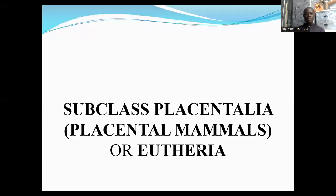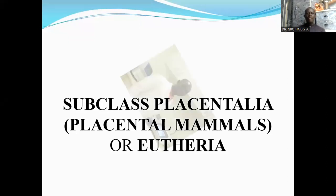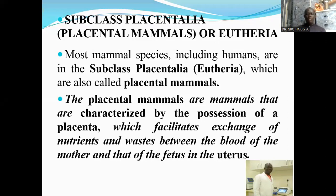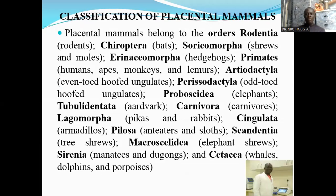Placentalia is also called the subclass Eutheria. The Placentalia consists of the placental mammals — mammals that possess a placenta to accommodate their embryo. The placenta facilitates exchange of nutrients and wastes between the blood of the mother and that of the fetus in the uterus. We also want to look at the classification of these placental mammals.